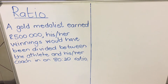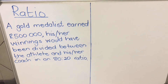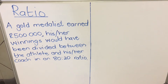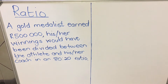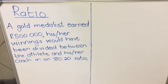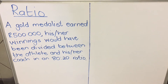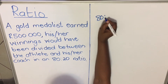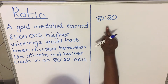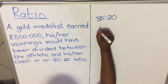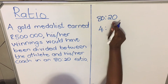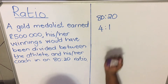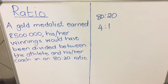When you are dealing with ratios, the first thing you need to do is simplify the ratio to its simplest form. So when you have 80 to 20, find a number that will divide both of them without leaving a remainder — that number will be 20. Dividing 80 by 20 gives 4, and 20 by 20 gives 1. So the ratio 80 to 20 is the same as the ratio 4 to 1.